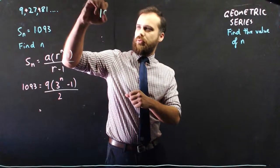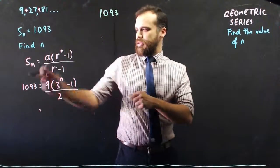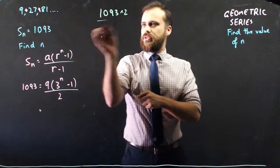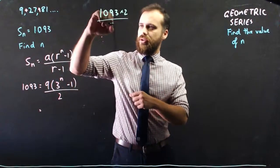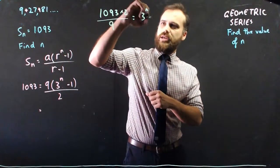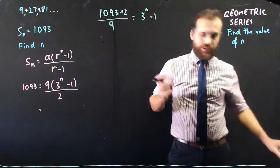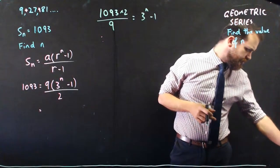So the next line's going to be something like 1,093 times it by 2, divided by 9, and that's going to be 3 to the n minus 1. Calculator.